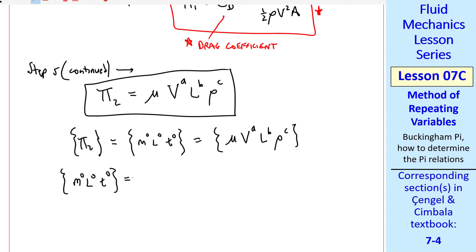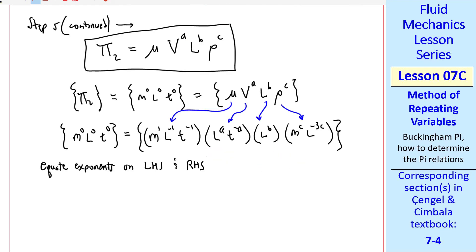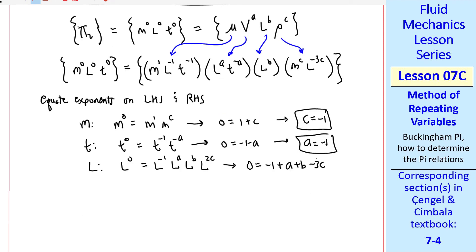I'll go through the algebra more quickly this time. Going back to step two and putting in all the dimensions. These are the primary dimensions for mu, v raised to exponent a, l raised to exponent b, and rho raised to exponent c. As we did previously, we equate the exponents on the left hand side and the right hand side. For m, we get zero equals one plus c, or c equals negative one. For t, we get zero equals negative one minus a, or a equals negative one. For l, we get zero equals negative one plus a plus b minus three c. Plugging in a and c, we can solve for b. I'll let you do the algebra for practice. We get b equals minus one.